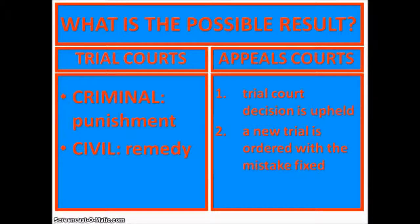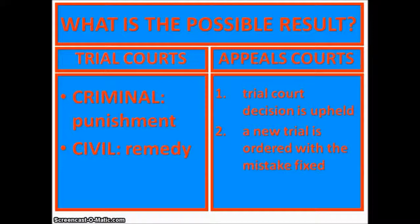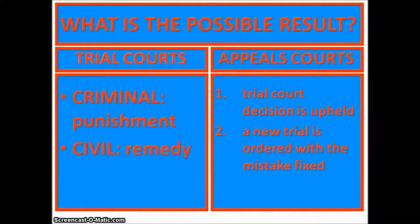For example, say it's a drug case where the person is charged with possession of a narcotic and the search in which the narcotic was found was illegal — so now the narcotics are excluded. The prosecution may choose not to even prosecute again. Though the appeals court didn't find the person not guilty, they essentially take the heart of the prosecution's case away and don't re-prosecute.